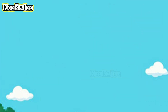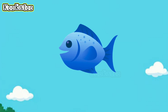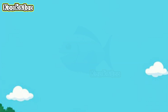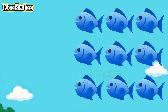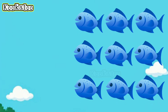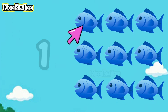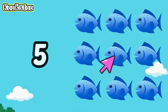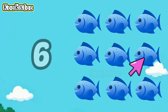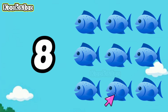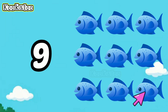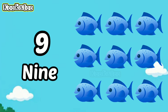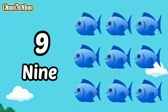And the next one is a fish. How many fishes can you see? One... Two... Three... Four... Five... Six... Seven... Eight... Nine. There are nine fishes.